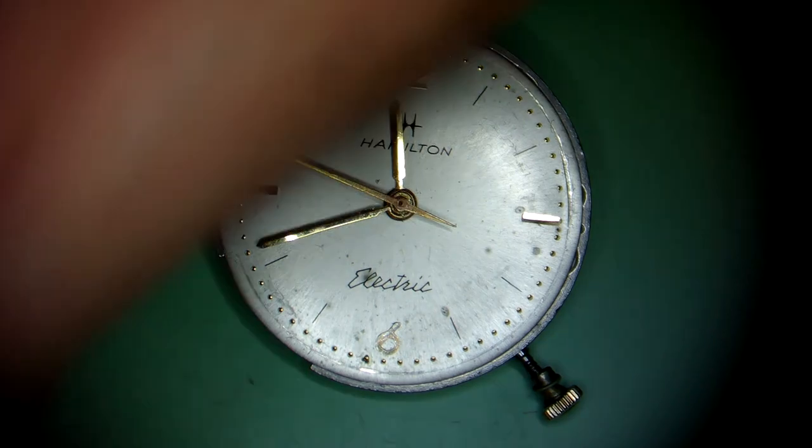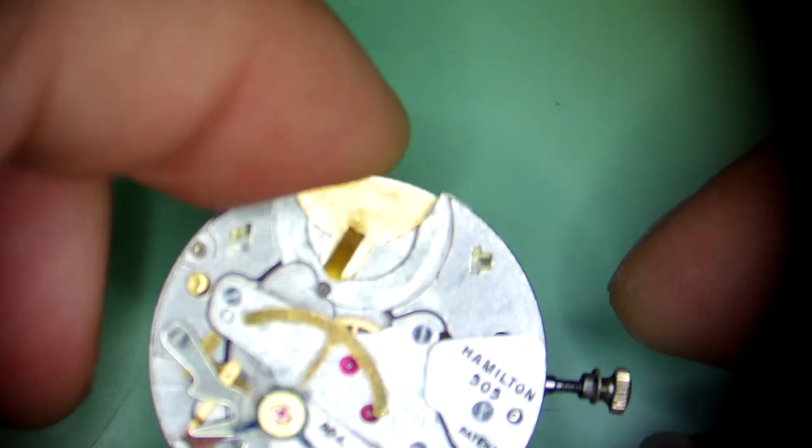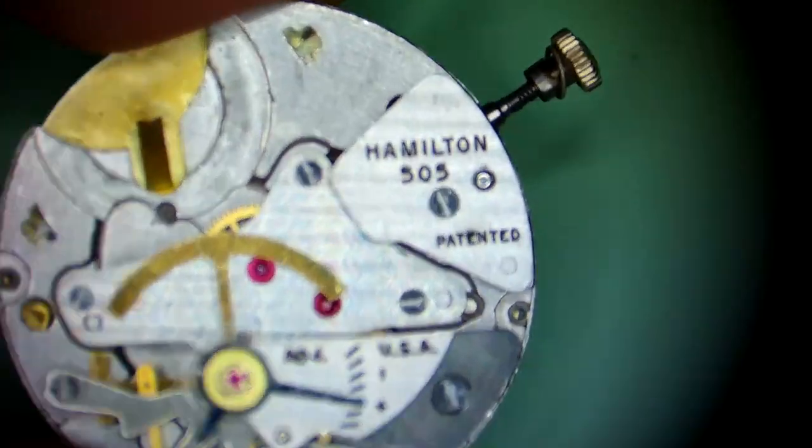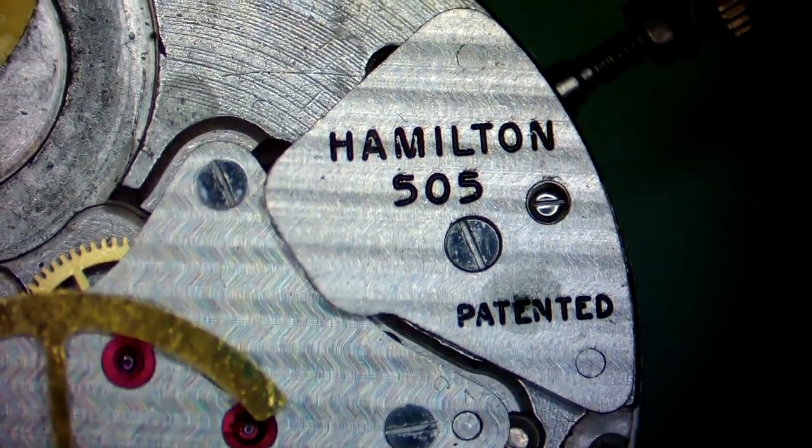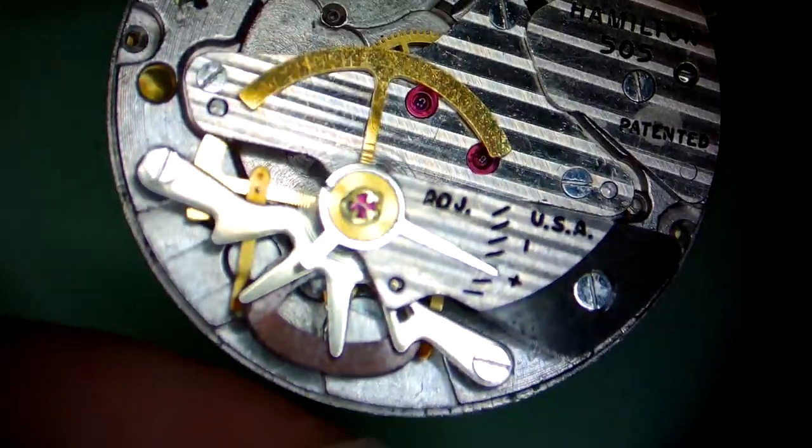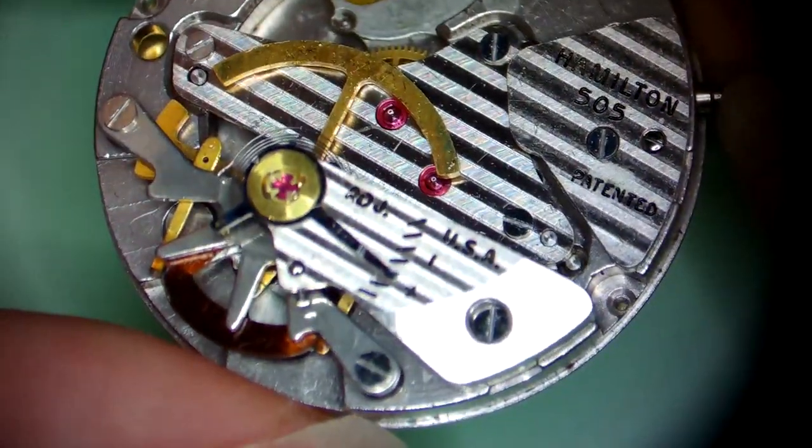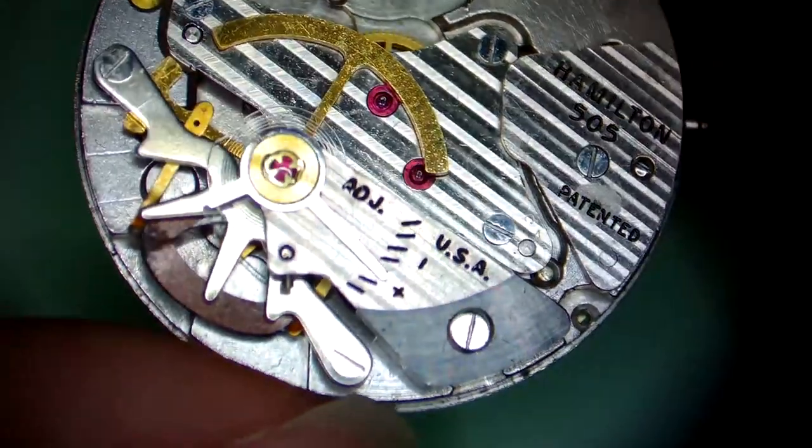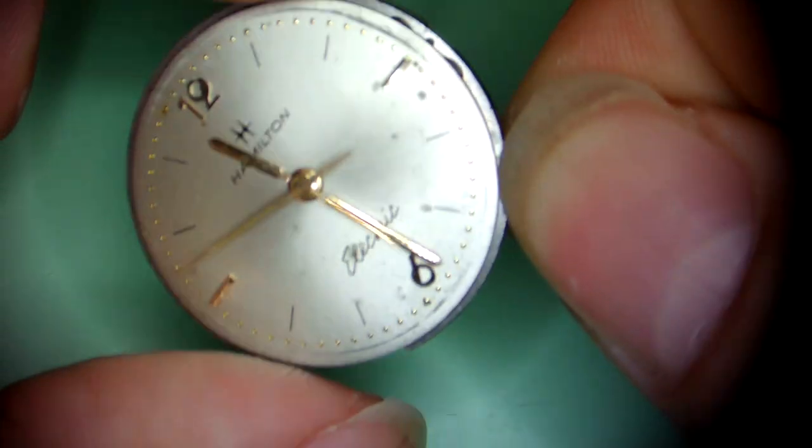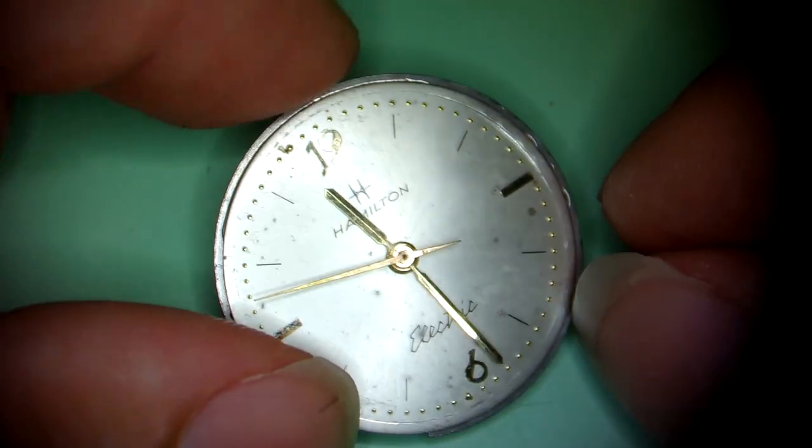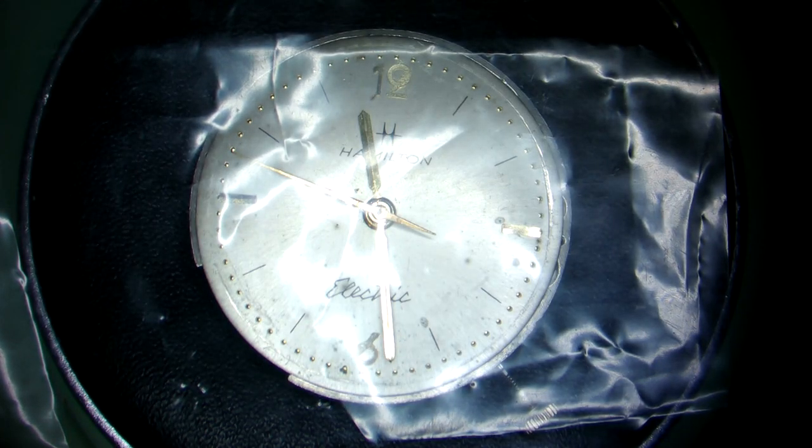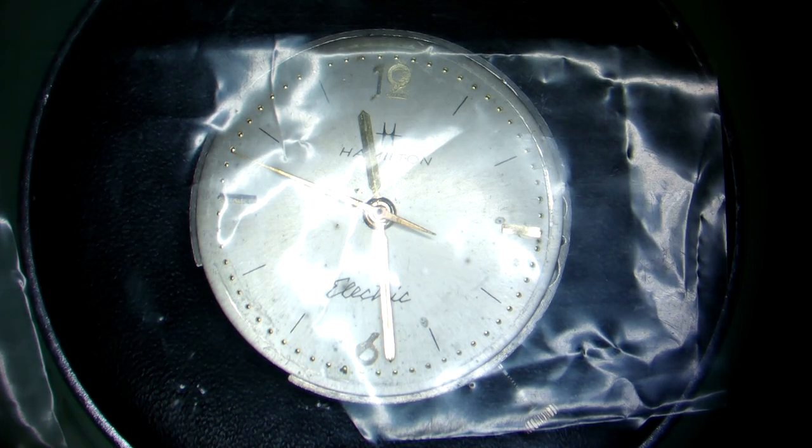This is not a quartz watch. It's actually a mechanical watch that, instead of a mainspring, uses an electromagnet that sits on the balance itself, and by alternating with the real magnets that sit on the watch plate, by turning on and off, it actually creates the motion.